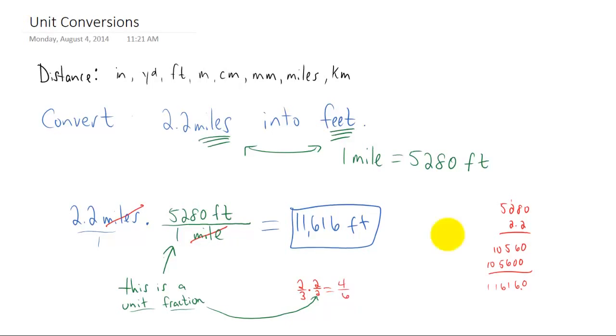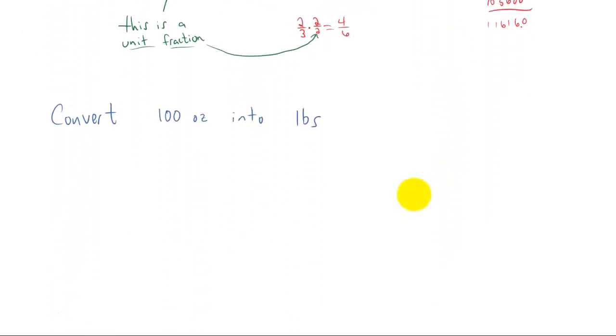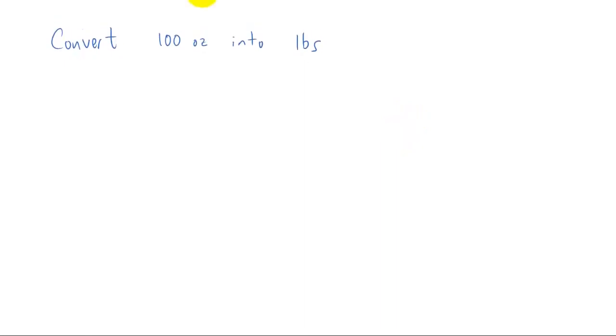Okay, let's do another example. Let's convert 100 ounces into pounds. Again, all you have to do is find a relationship between ounces and pounds. I'm looking it up right now and it turns out that 1 pound is 16 ounces. So we put that conversion into unit fraction. And the important part is making sure that our units line up. So if we want to get rid of our ounces, we need ounces in the denominator of our unit fraction, just like that.